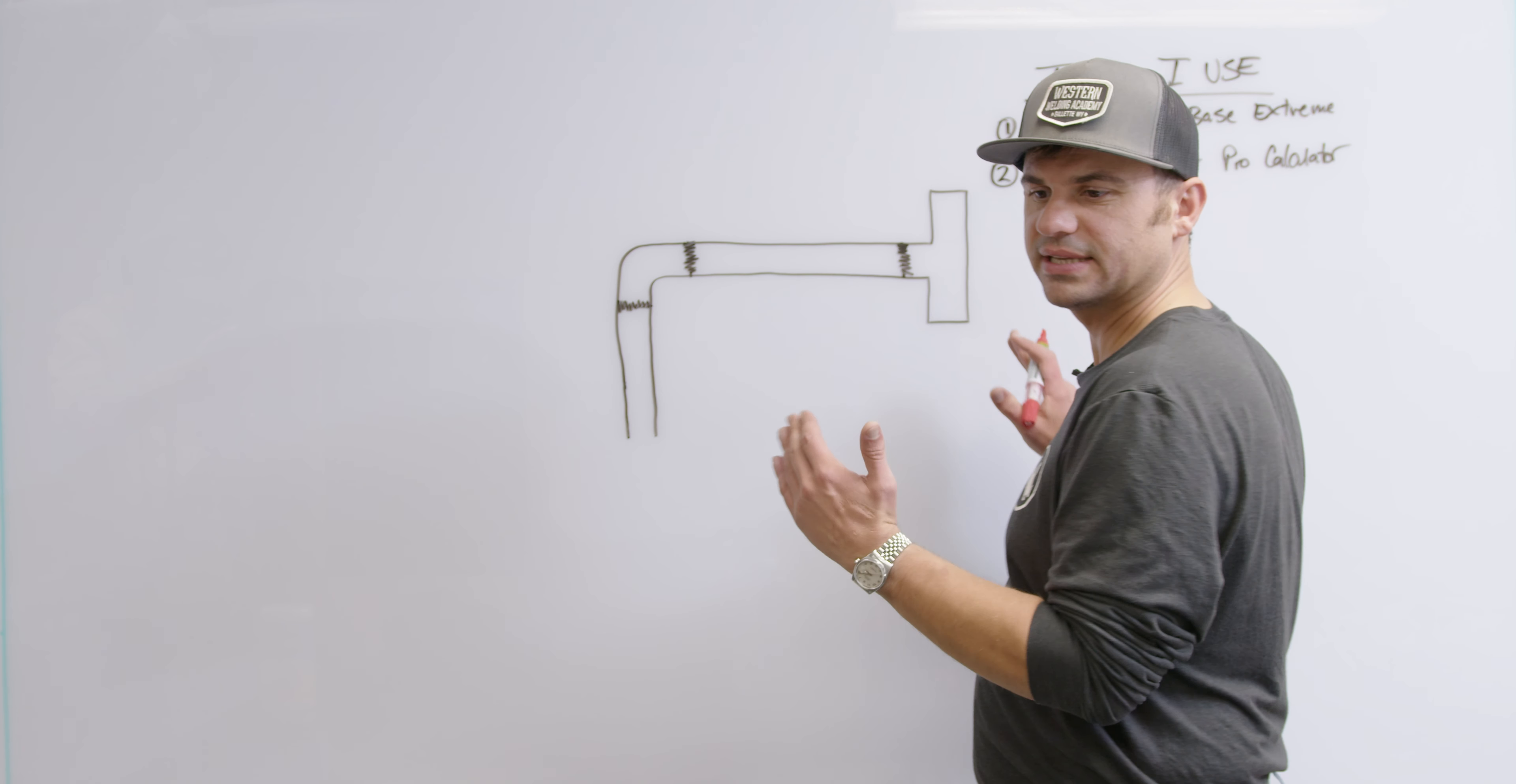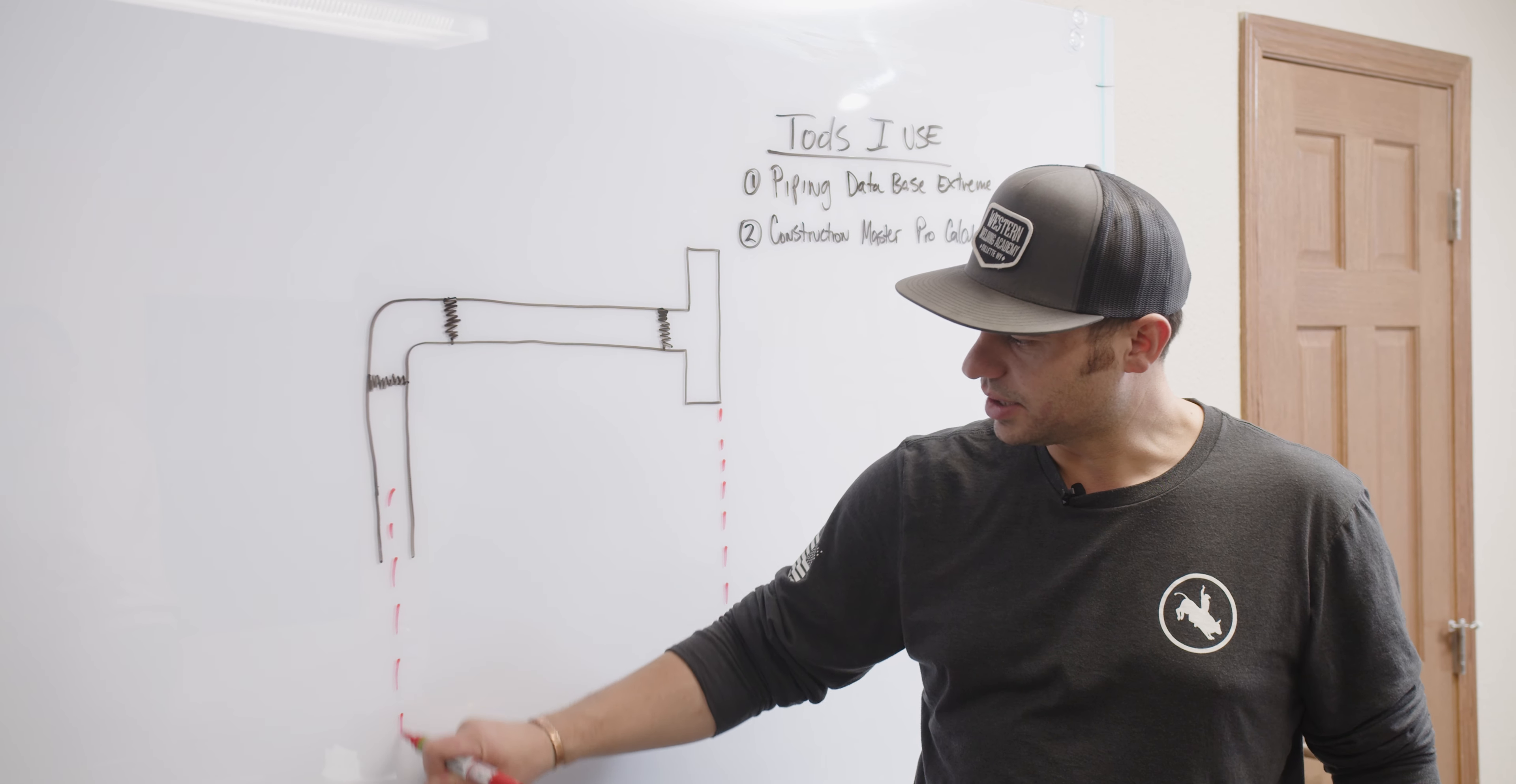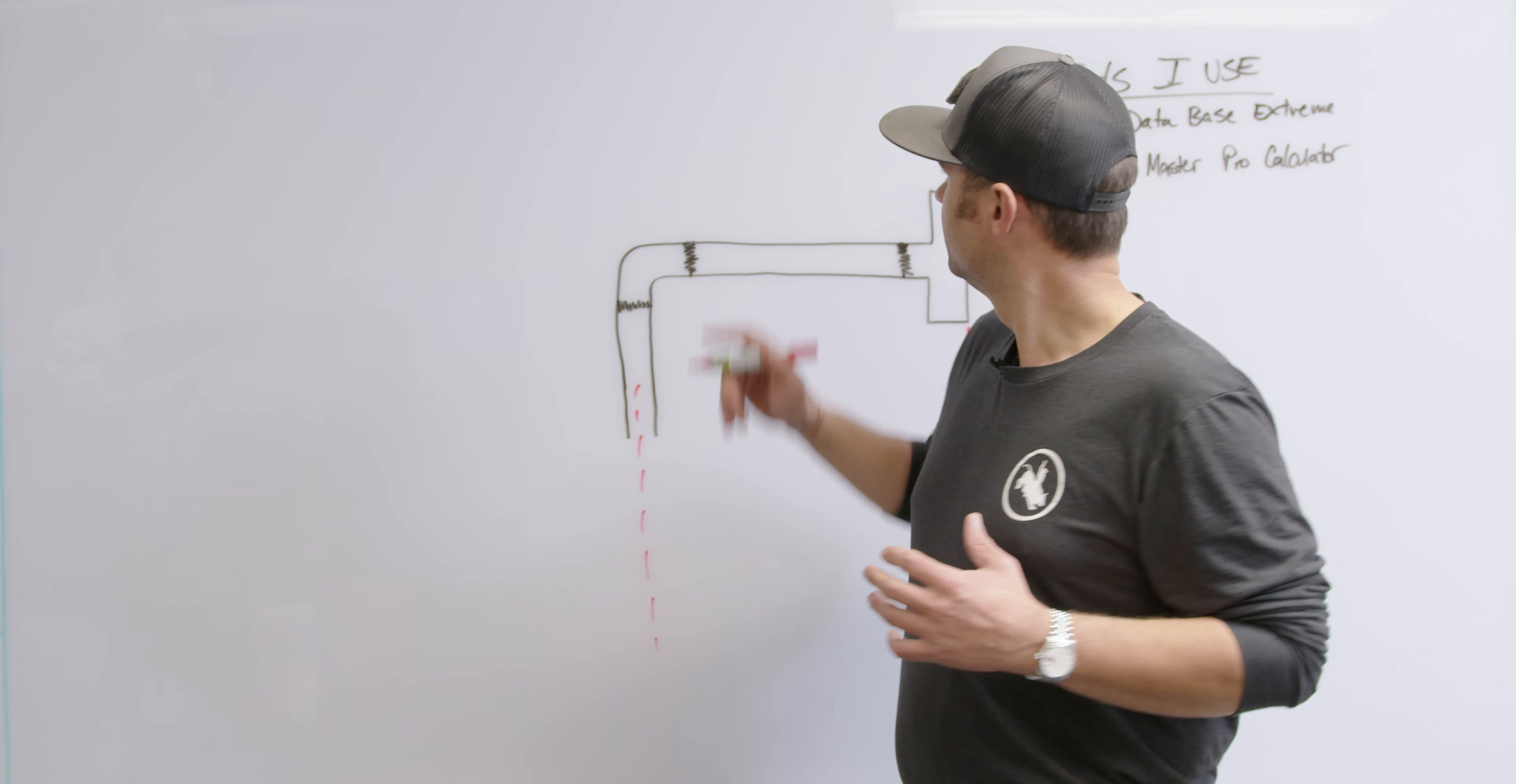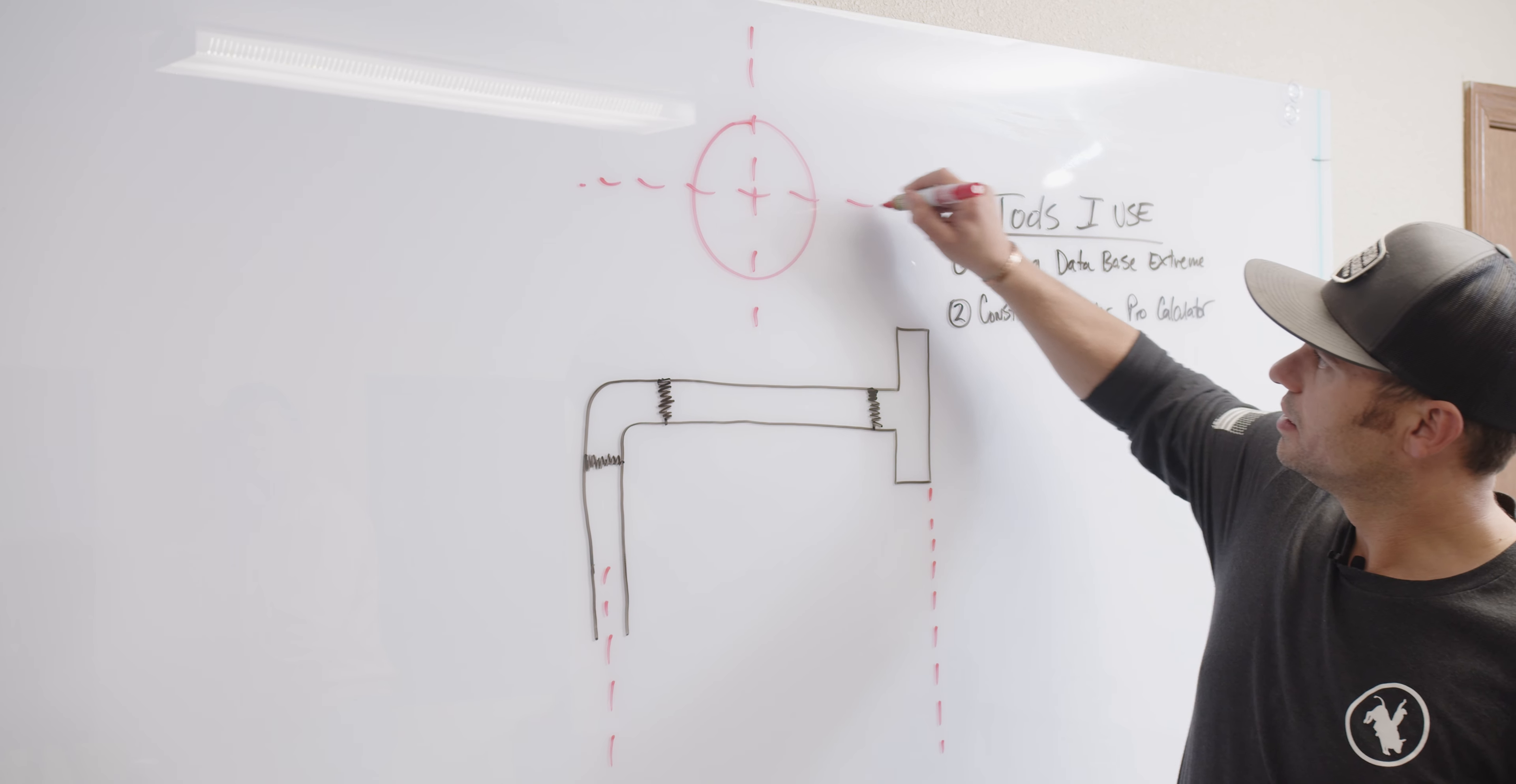Hey if you guys like this go ahead and drop me a comment. Tell me what you want to see me do next in the comment with the most likes. I'm going to send you a free pack of isometric paper from Western Welding Academy and it's a great tool you're going to need when you start going out there doing some pipe fitter stuff, doing some layout and getting ready for welding.